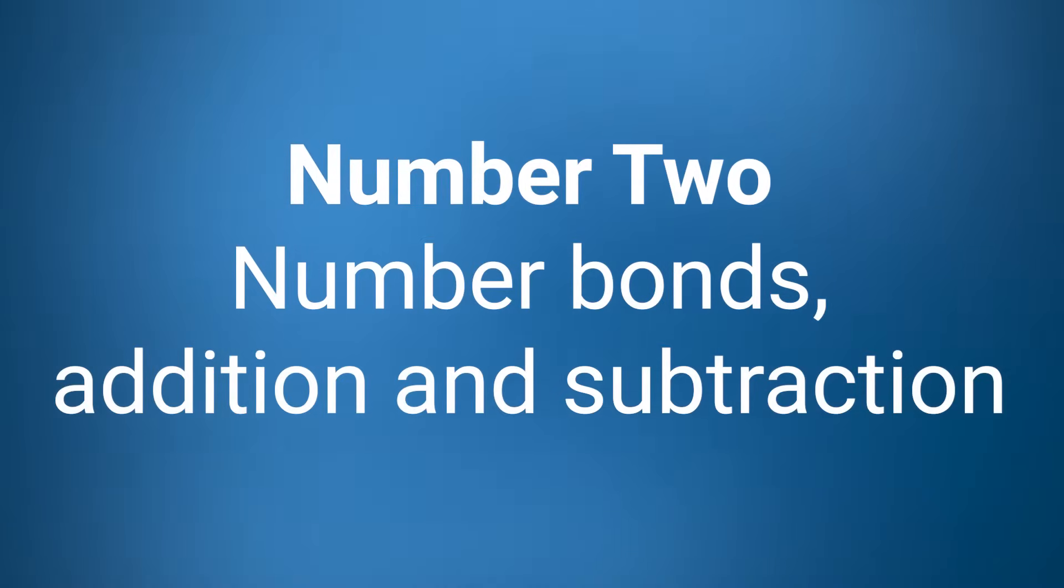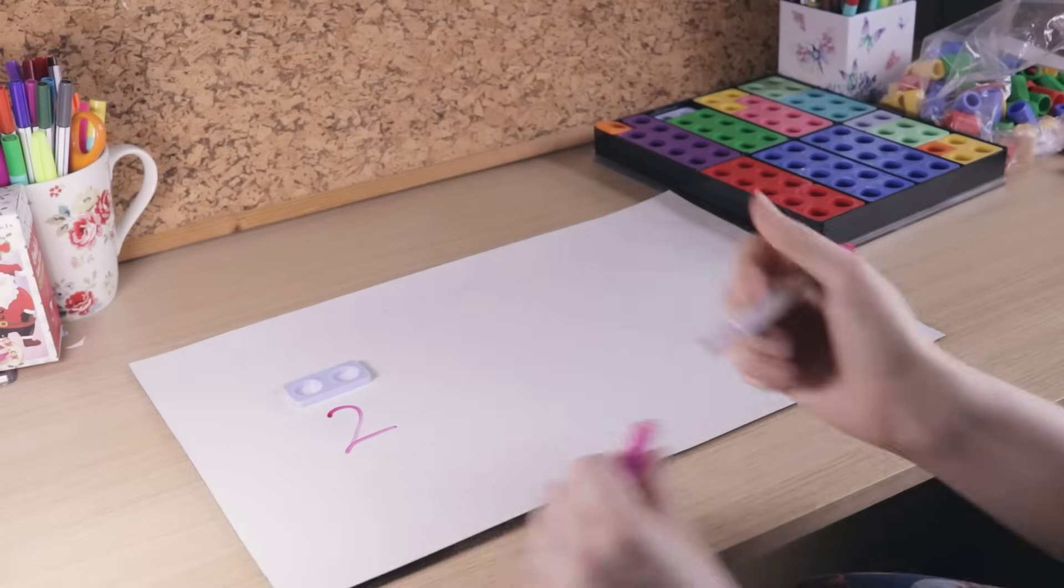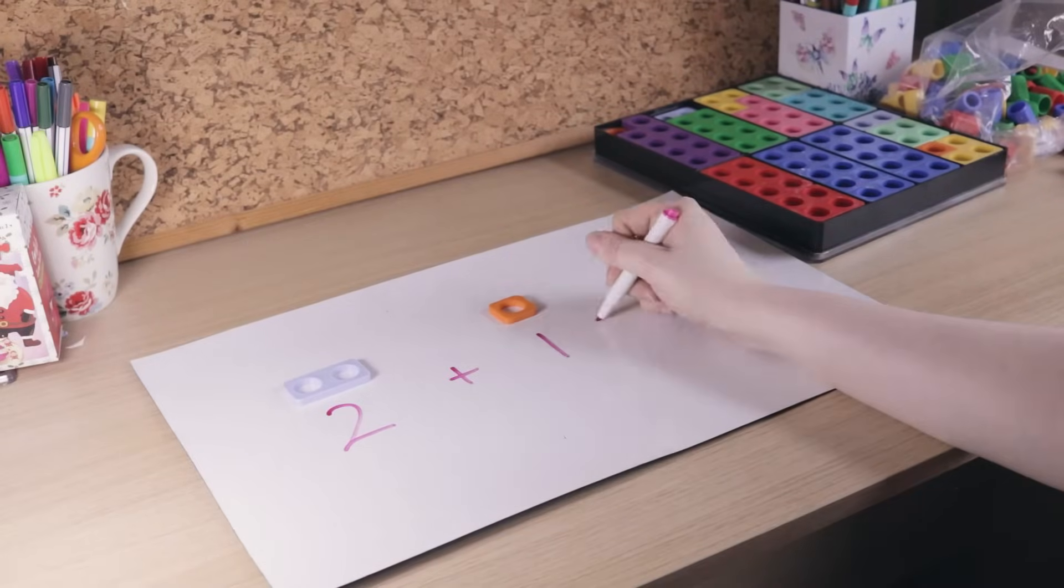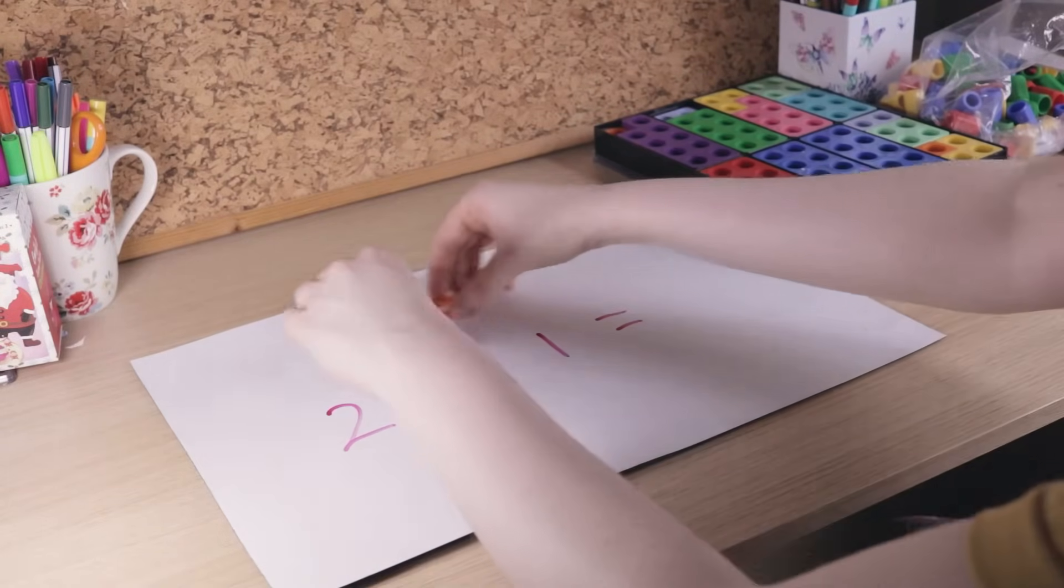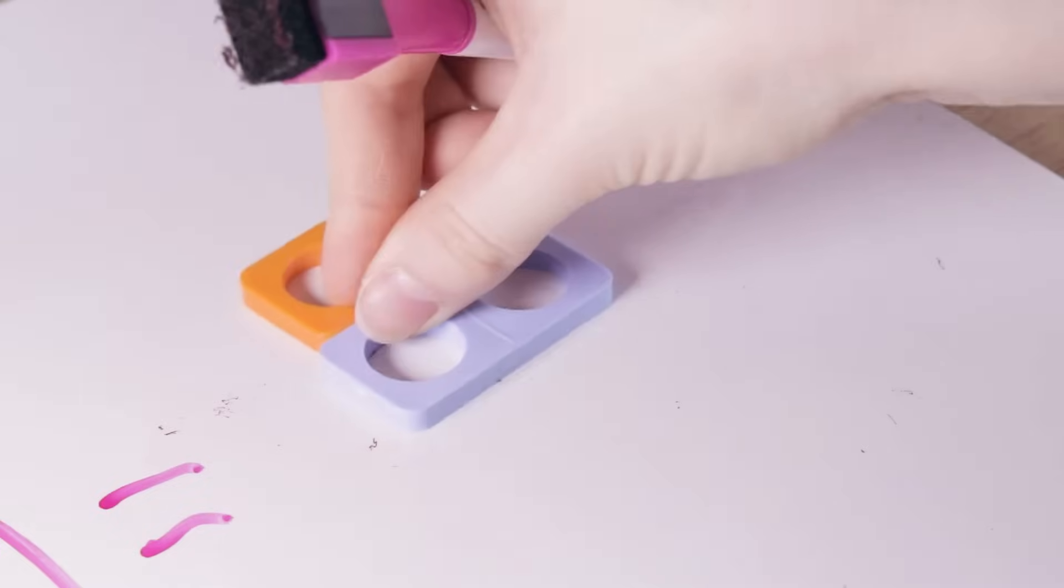Once children have an understanding of what the different Numicon shapes represent, they can start to apply this knowledge to different concepts such as number bonds, addition and subtraction. When talking about addition, get the children to combine the shapes to make a new number. If we combine this two shape with one, we get a three shape.